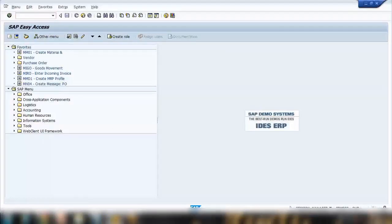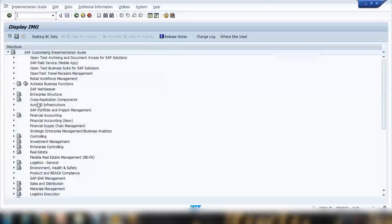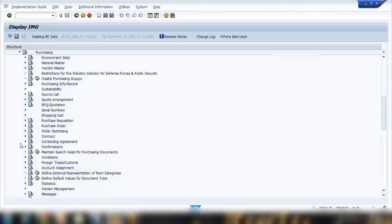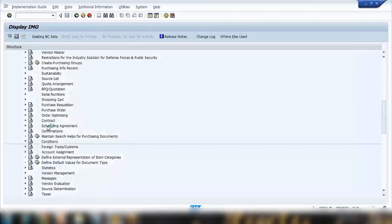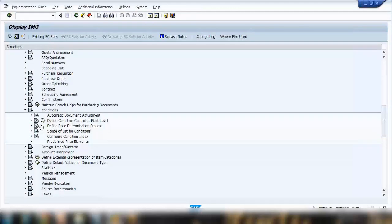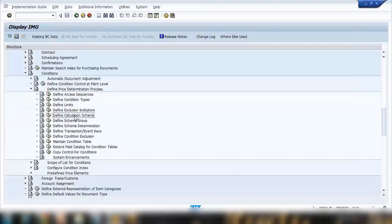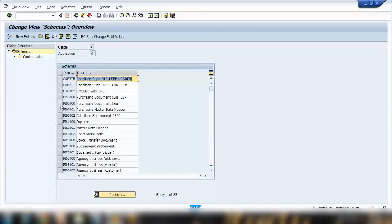So if I go to SPRO, Material Management, Purchasing, and here conditions. And here define price determination process. And here you can see calculation schema. So this is calculation schema or you can call it pricing procedure. If I open that, this is a standard one that is used in all the orders.